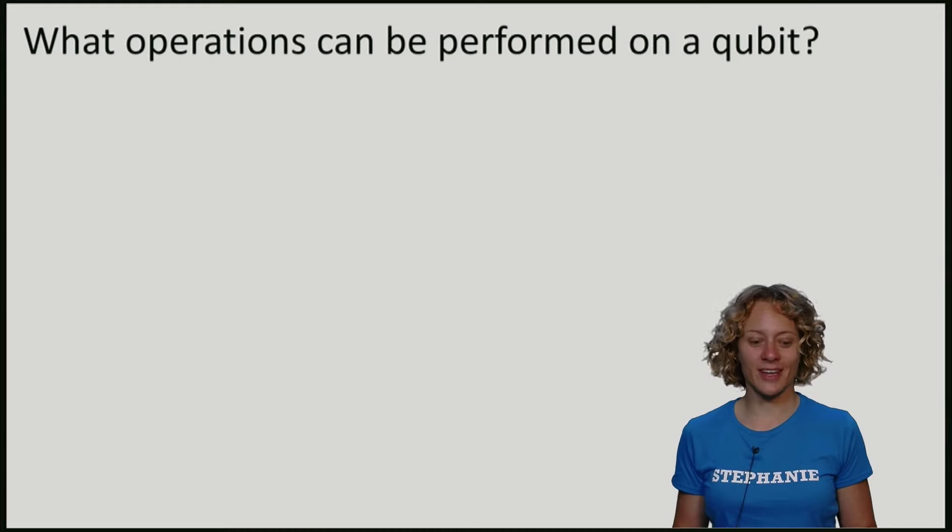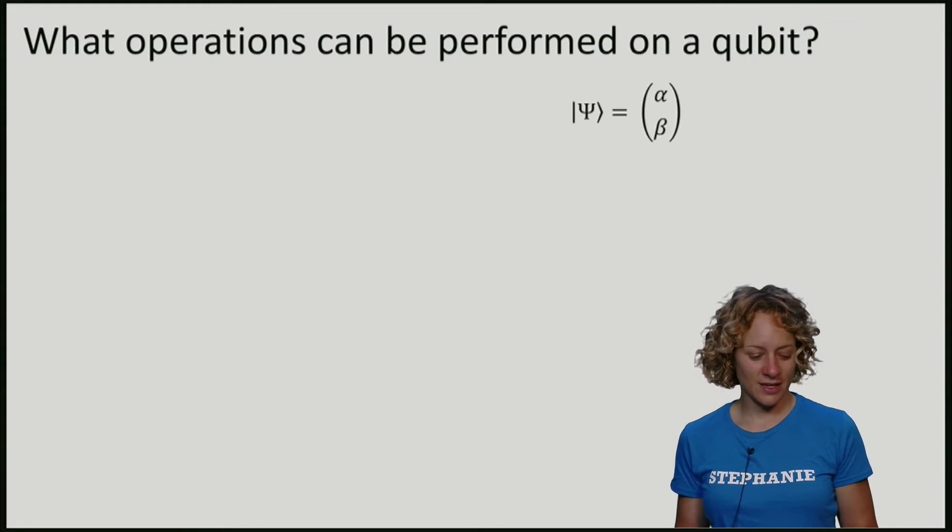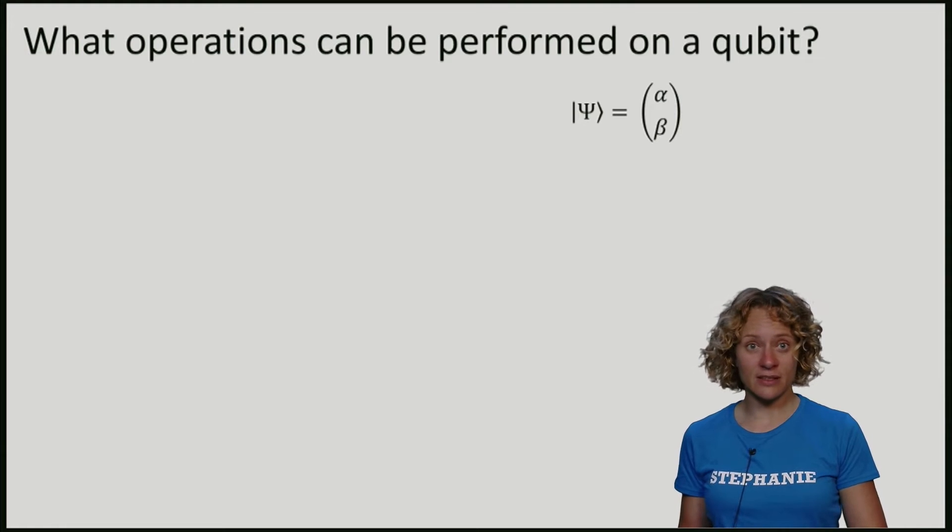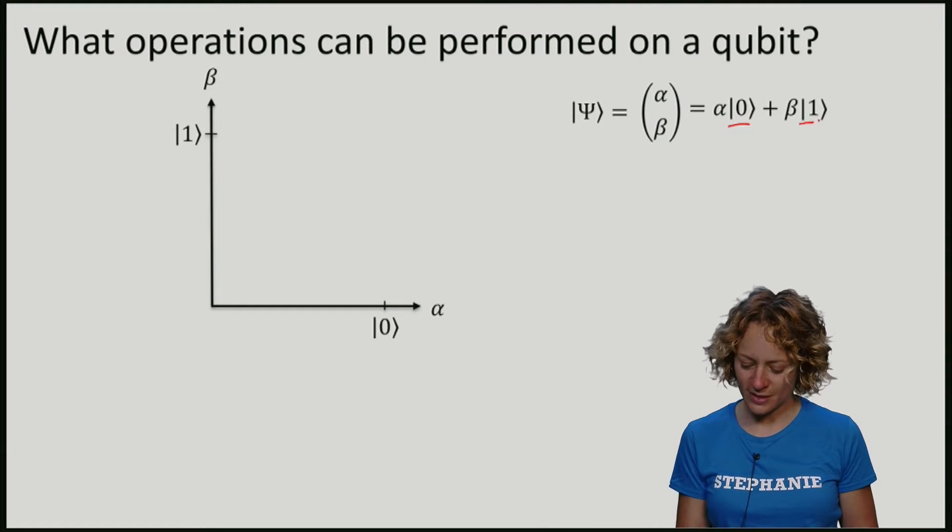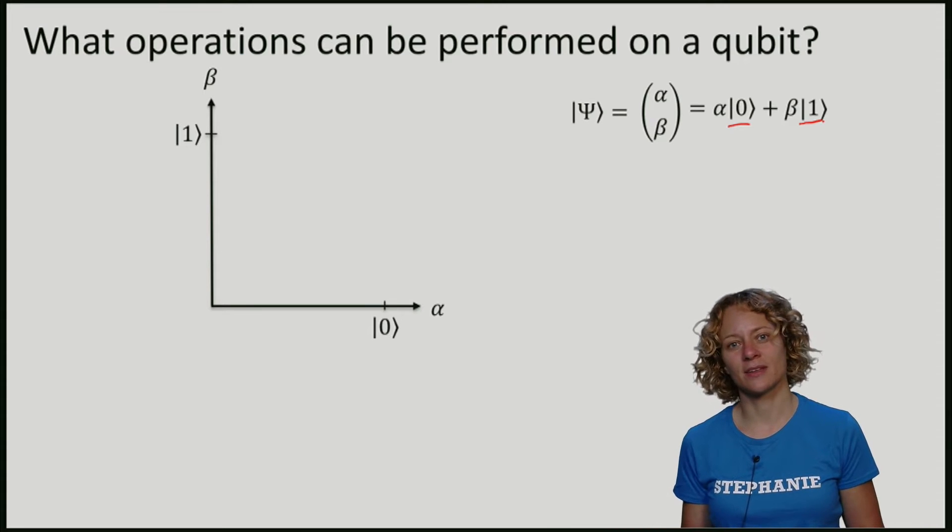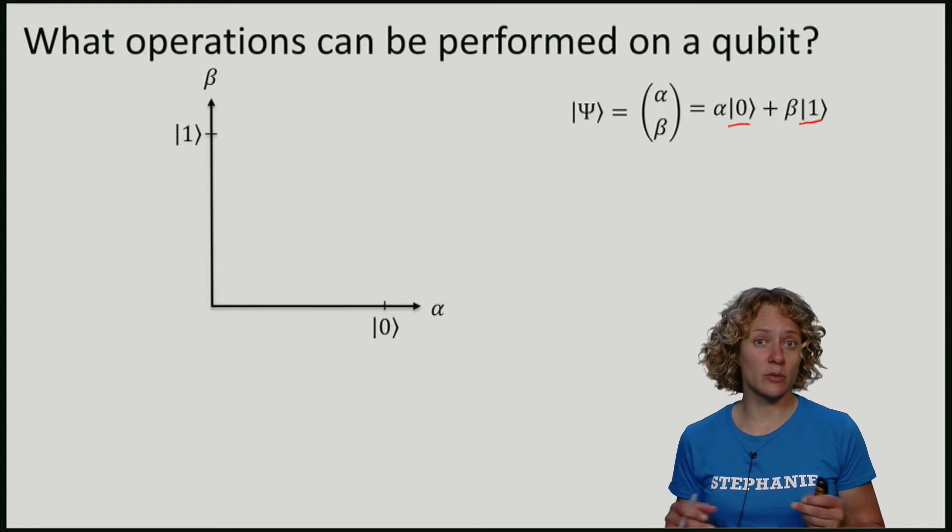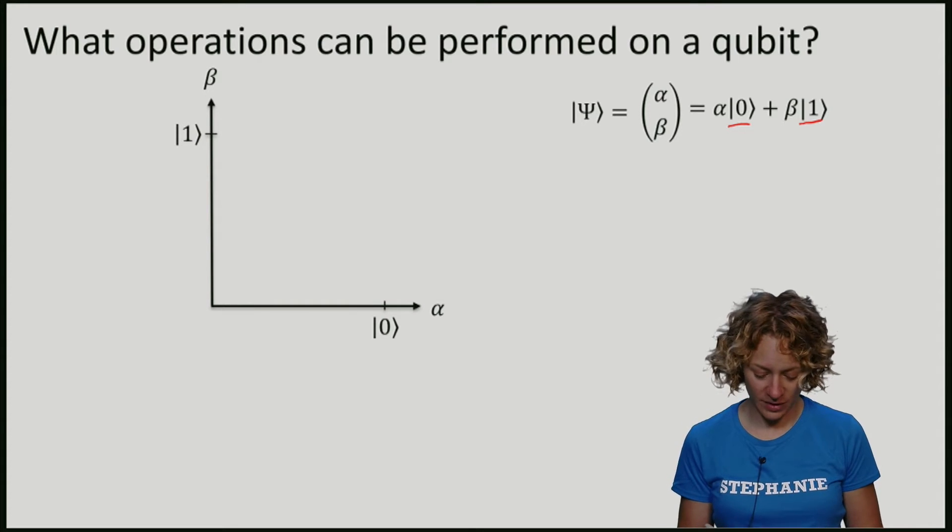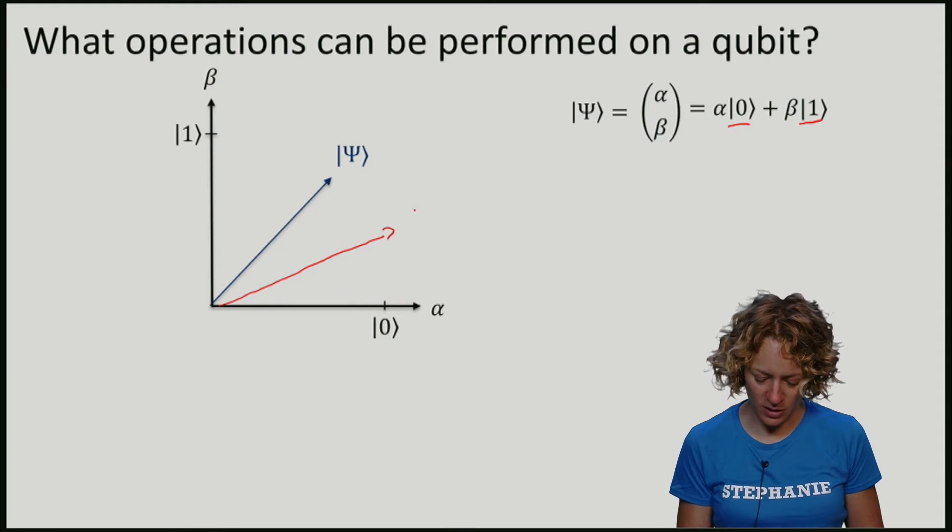What operations can we perform on a qubit? Remember that a qubit is a vector, expressed in terms of the standard basis. If I perform an operation on a qubit, I want to end up with another qubit. So instead of this one, maybe after the operation, I want to end up with this new qubit down here.